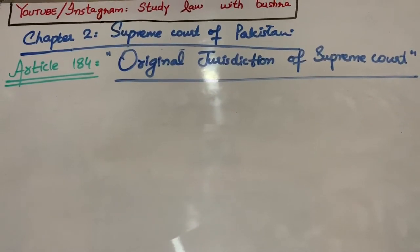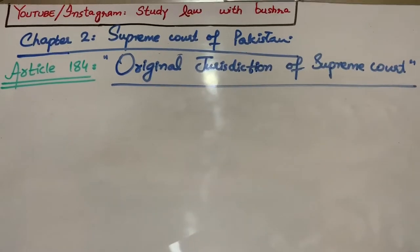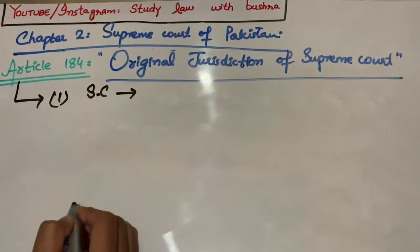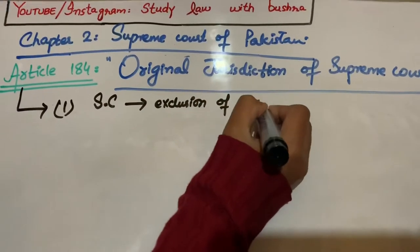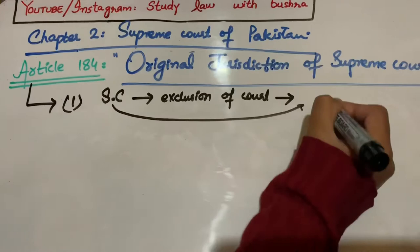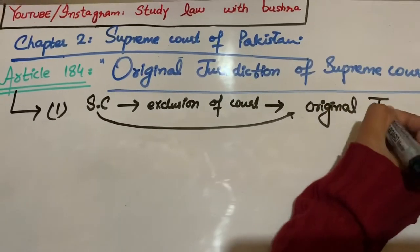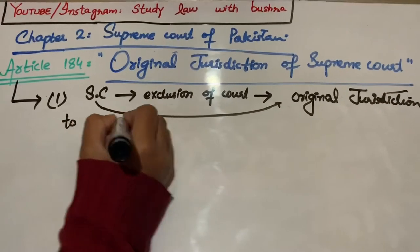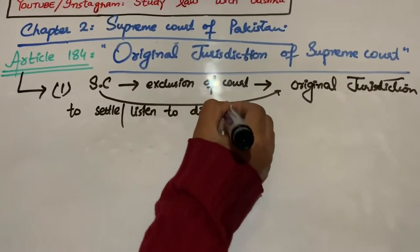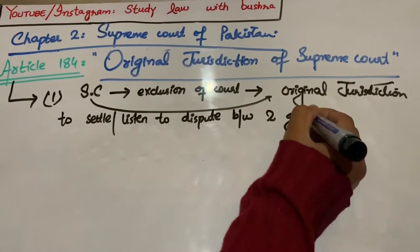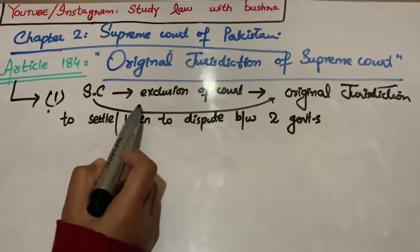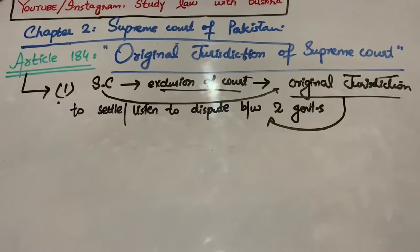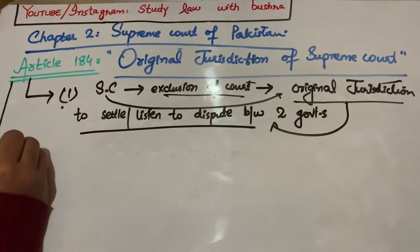Article 184 Clause 1 کہتی ہے کہ Supreme Court کے پاس، باقی تمام courts کو exclude کرکے، original jurisdiction ہے — any dispute between any two or more governments کو solve کرنے اور settle کرنے کے لیے۔ یعنی دو governments کے درمیان جو dispute ہو، اسے Supreme Court ہی سنے گی۔